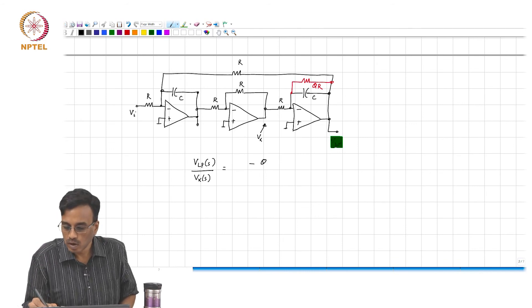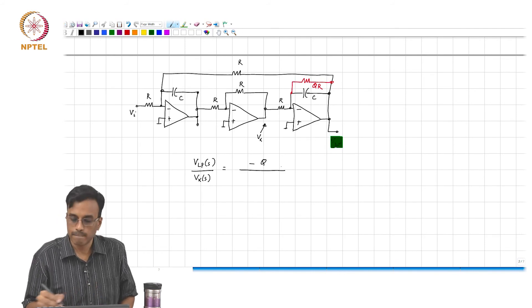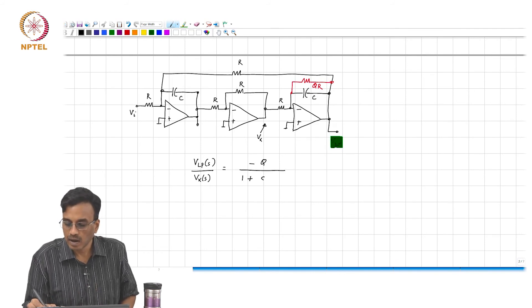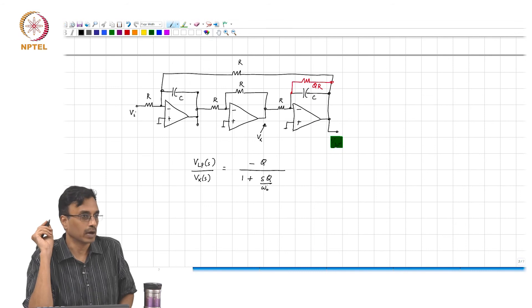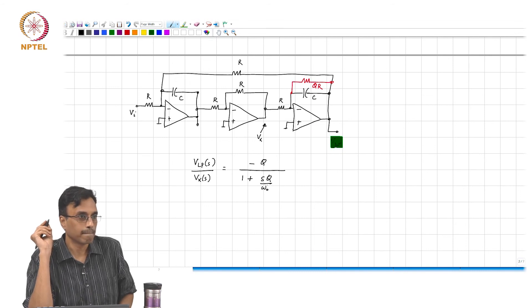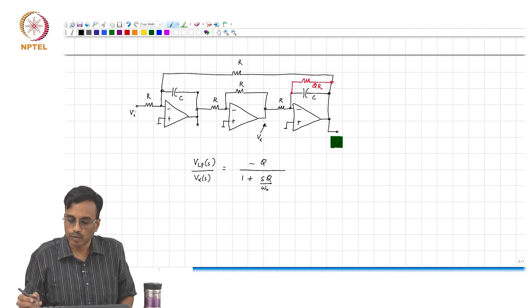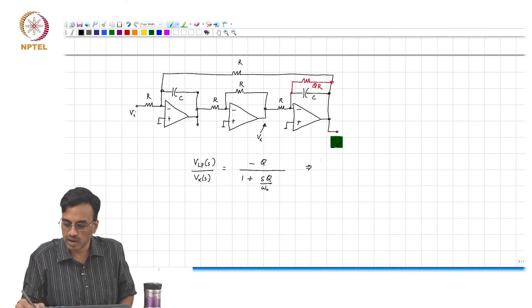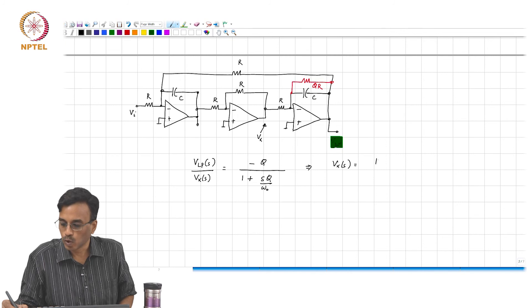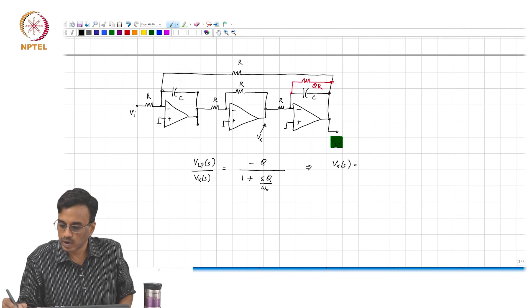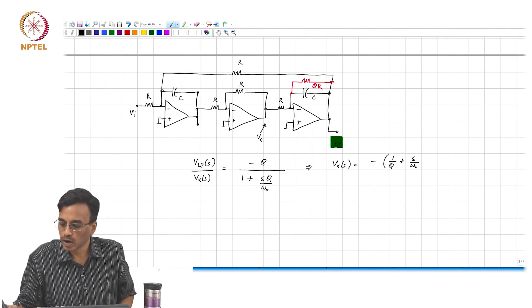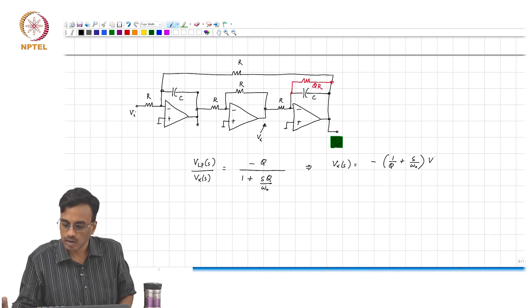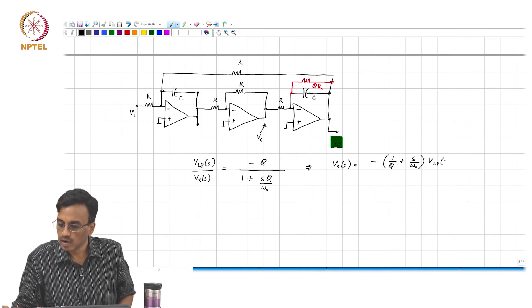Minus Q divided by 1 plus SQRC, which is Q by omega naught. And therefore, what is Vx of S? It is 1 plus SQ, or if you divide the numerator, it is minus 1 over Q plus S by omega times Vlp of S.